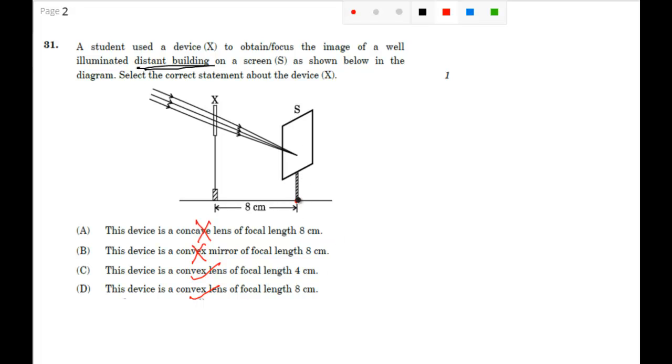So, this screen is on focus and the distance will be the focal length. Here the focal length is 8 cm and the device is a convex lens. So, very simple question, the answer will be D. I hope it is clear to all of you. Thank you.